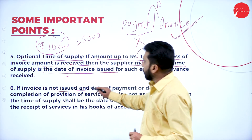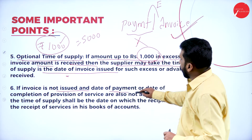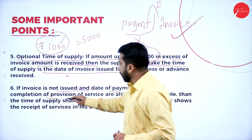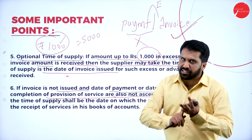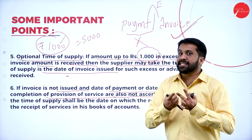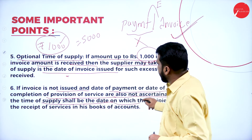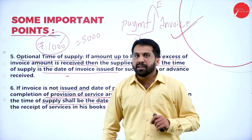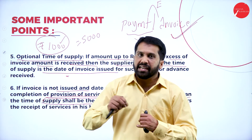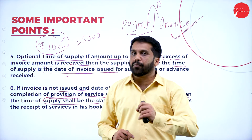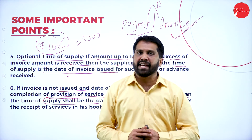Point 6: if an invoice is not issued, and the date of payment or date of completion of provision of service is also not ascertainable — meaning no invoice, no payment collected, and no information about service provided — then the time of supply shall be the date when the goods were supplied. When there is no information about payment or invoice, the time when goods were supplied is considered as the time of supply.